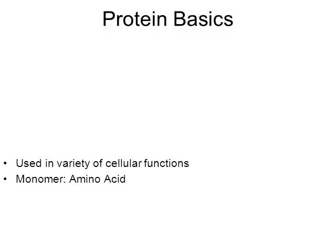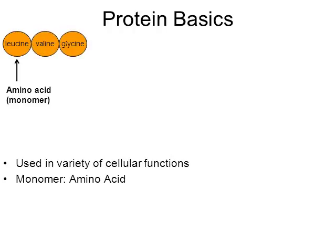I mentioned earlier in another video monomers and polymers. A monomer is a small organic molecule, and in the world of proteins, we call the monomer of a protein an amino acid. There are 20 different kinds of amino acids. For instance, leucine, valine, glycine, and alanine are four of the 20 different kinds of amino acids.